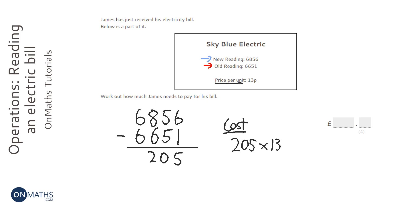So we'll do a little grid to work this out. 205, and 13 is 10 and 3, so we don't need to worry about that zero column.